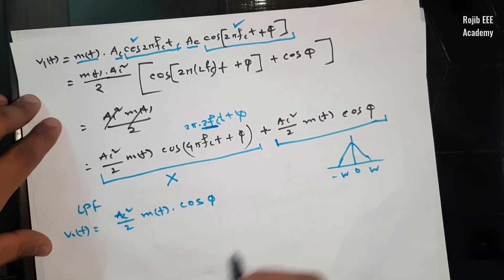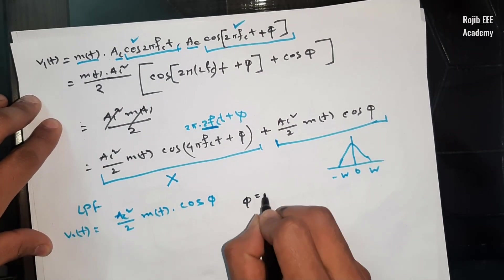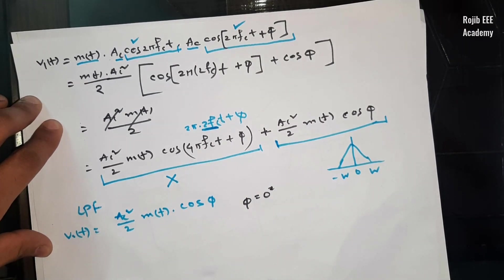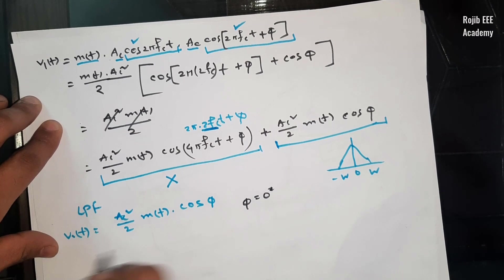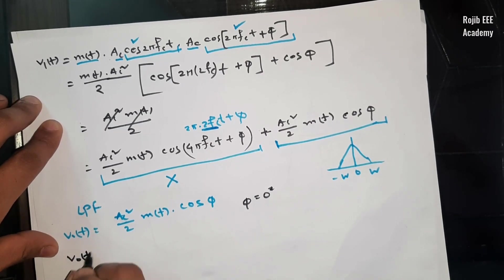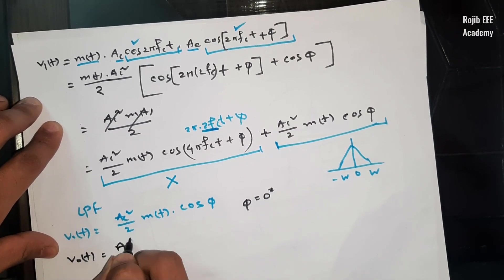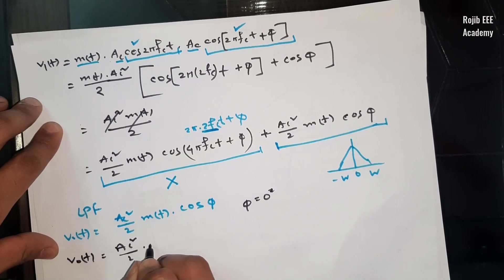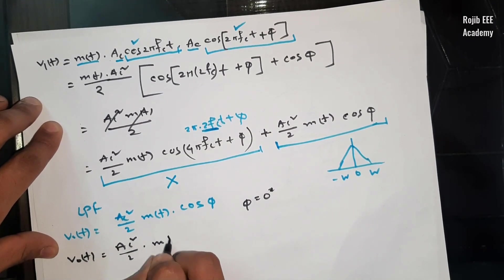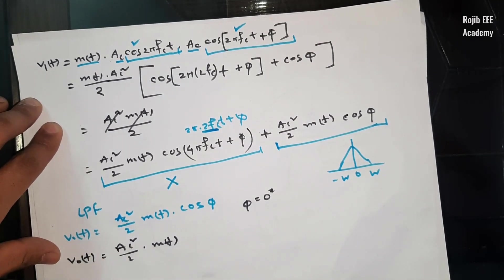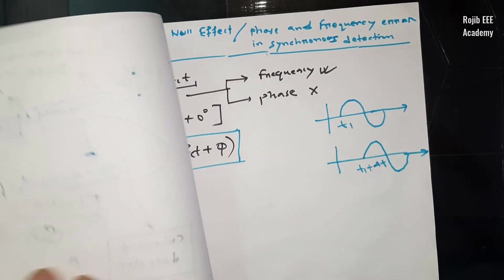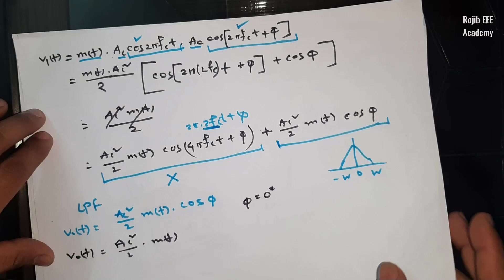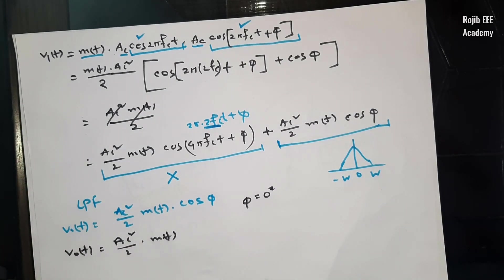When phi is 0 degrees — suppose our carrier frequency used the same carrier frequency — we don't have phase difference. It's simple. The output V0 = Ac²/2 · m(t). Cos(0°) = 1. So we don't have phase difference. If we draw the phase difference, we don't have phase difference. If we draw the frequency, the frequency is less than the phase difference — it is very important.